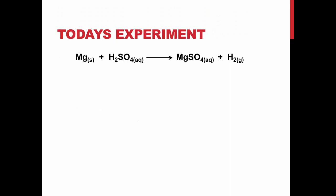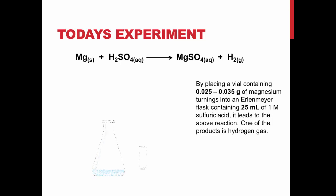In this experiment, you will use the reaction between solid magnesium and sulfuric acid to form a known amount of hydrogen gas. To do this, you will place a vial containing 0.025 to 0.035 grams of magnesium turnings into an Erlenmeyer flask containing 25 milliliters of 1 molar sulfuric acid.